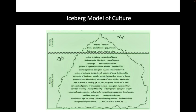In simple terms, the iceberg model of culture focuses on the tip as what is in awareness — it is visible and can be seen. However, the base of the iceberg — the bigger portion below the sea — is what is out of our awareness.